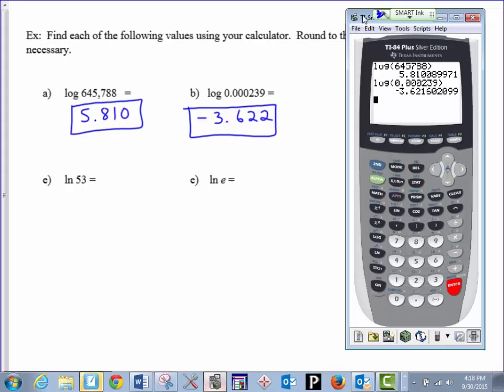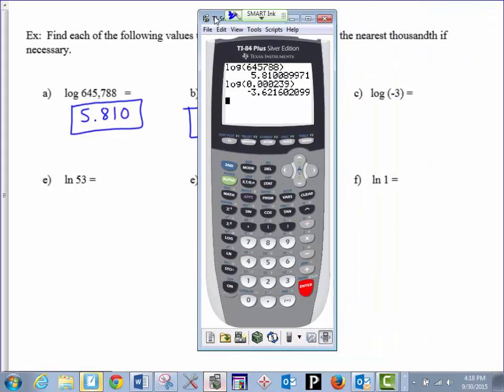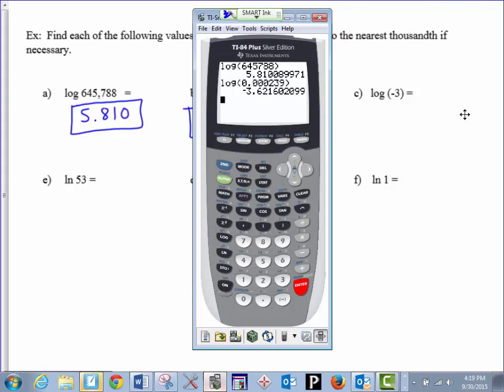I need to move my calculator so I can see my next problem. The next one over is log of negative 3. If I do log, use the negative button below the 3, and then the 3, close the parenthesis, and press enter. This one gives us an error. It says you have a non-real answer.